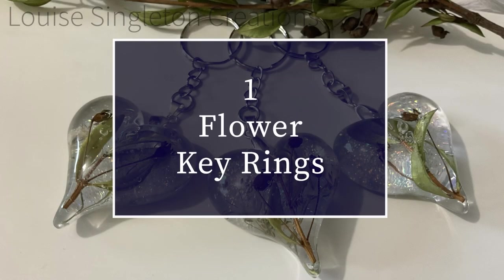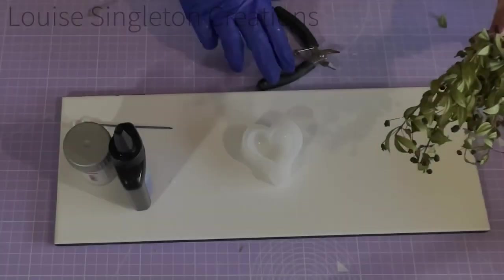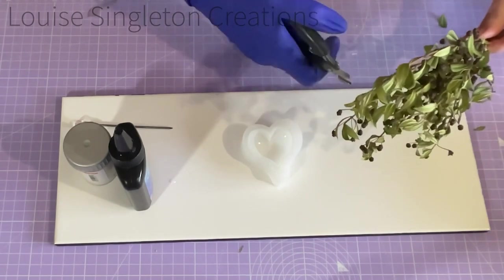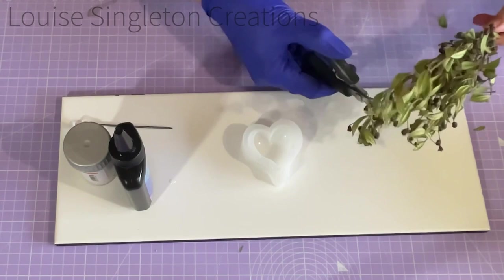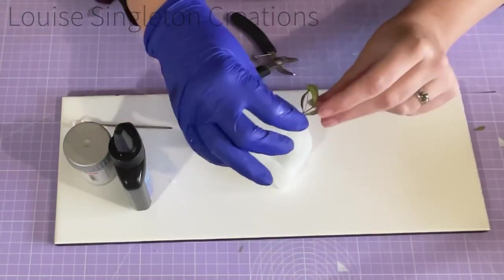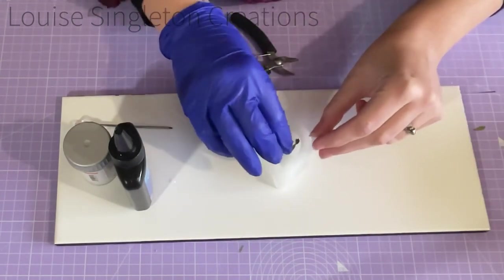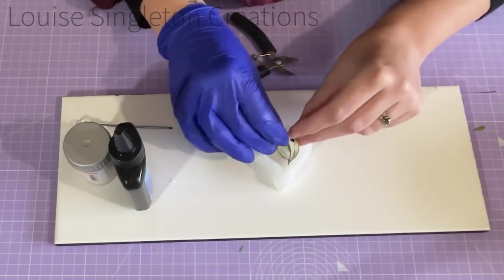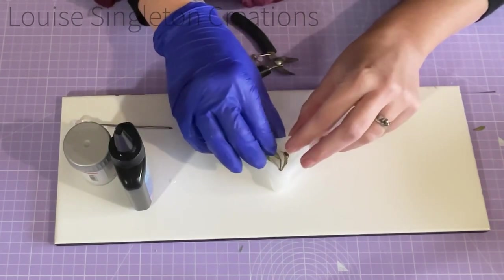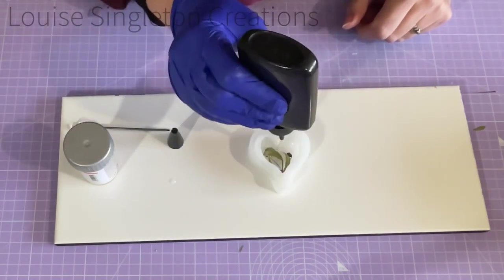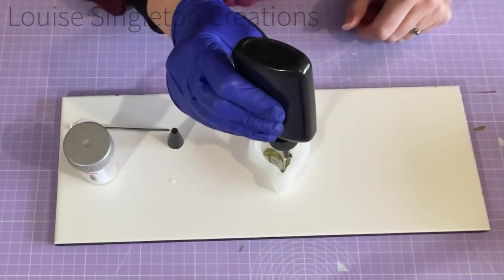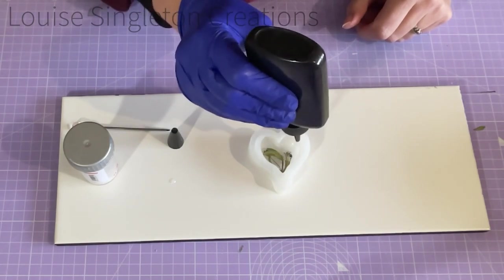Number one: flower key rings. In order to include five different projects in this video I've kept my instructions to a minimum, but hopefully you'll be able to see quite clearly what I'm doing. For this first project I snipped some dried foliage and pressed flowers and immersed them in the J-Diction UV resin.